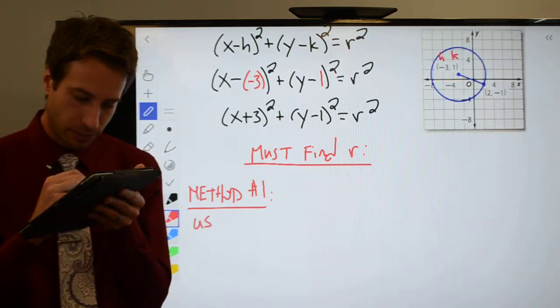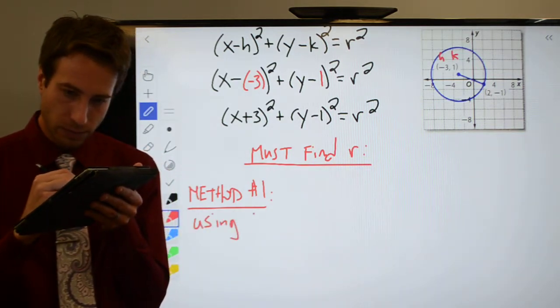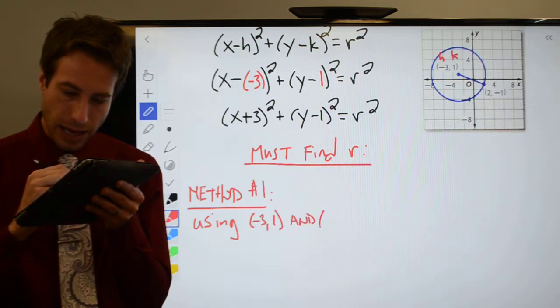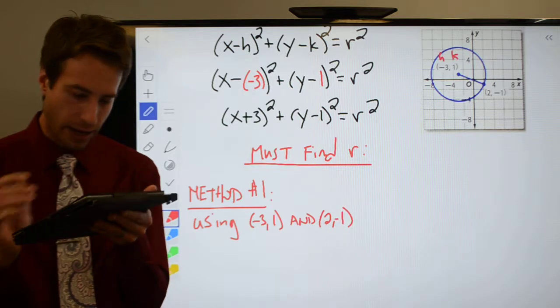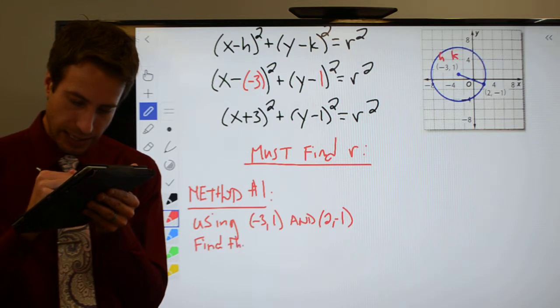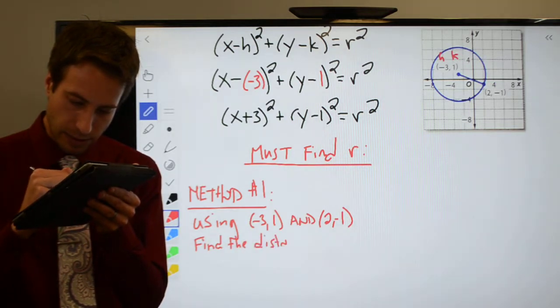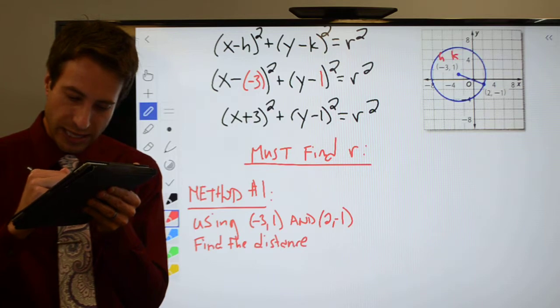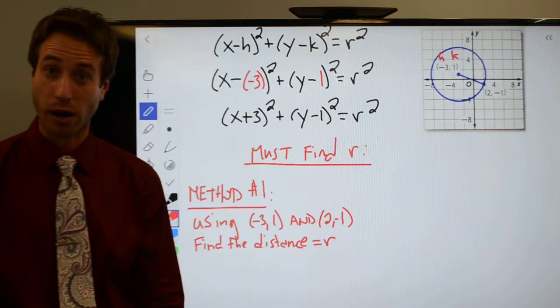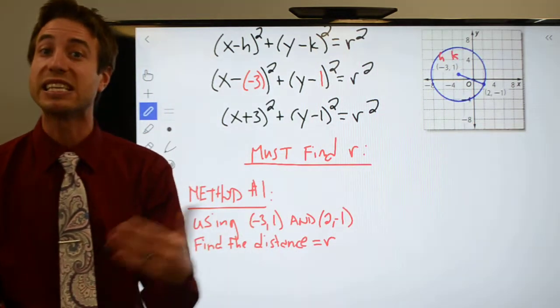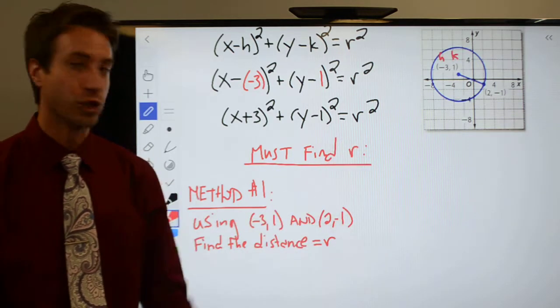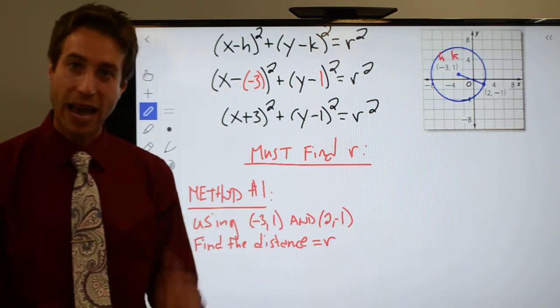So, using the points minus three, one, and two, minus one, find the distance, which in this case will be equal to my radius r. Right, if I can find the distance between those two points using the distance formula, then I will have my radius, which I can just plug into the equation. So, let's go ahead and do that.